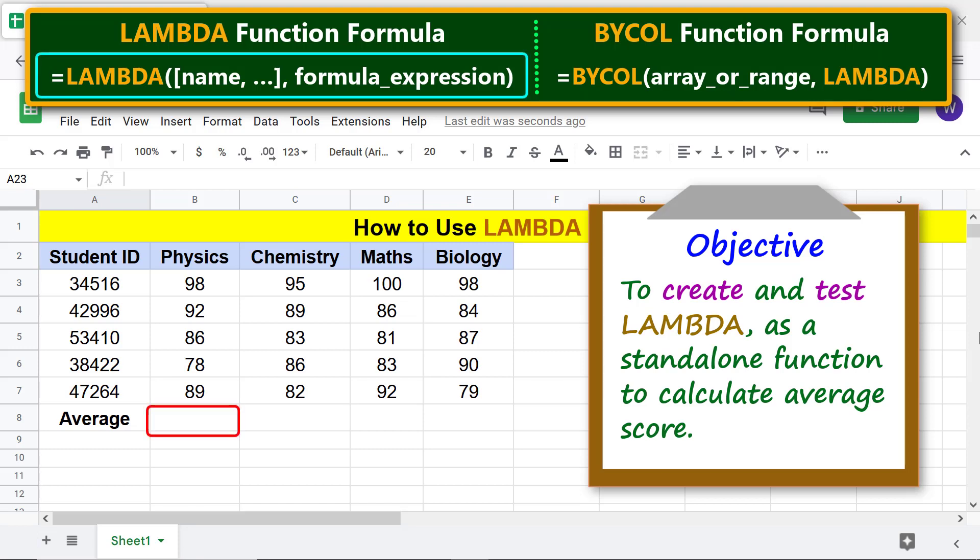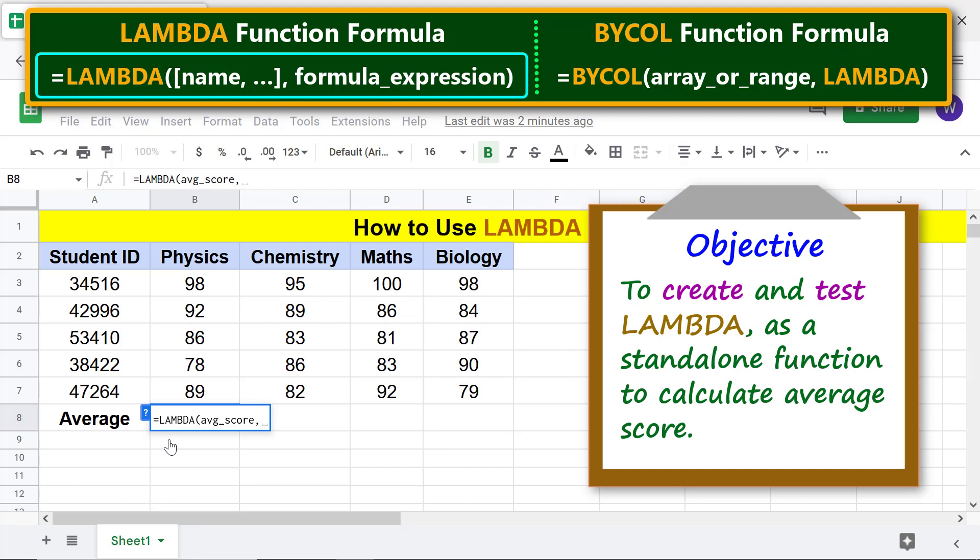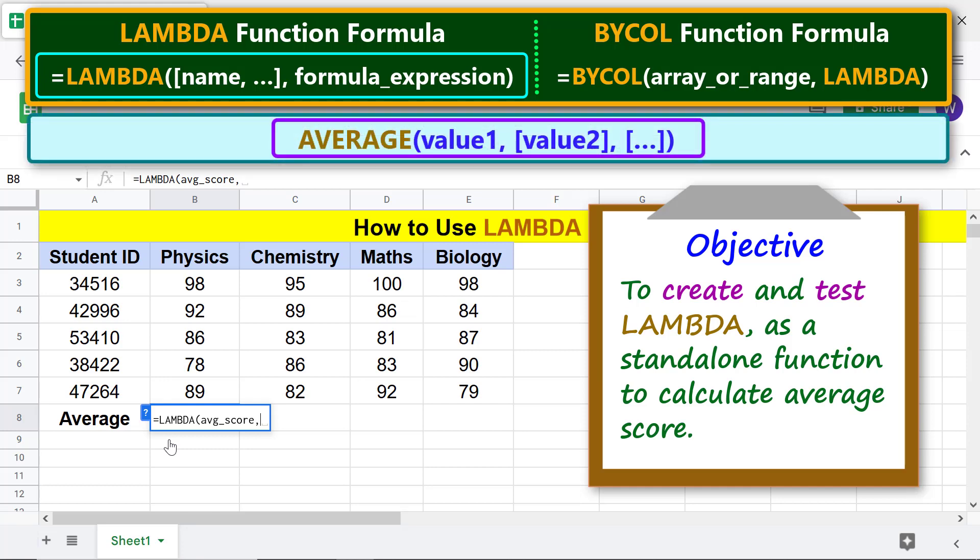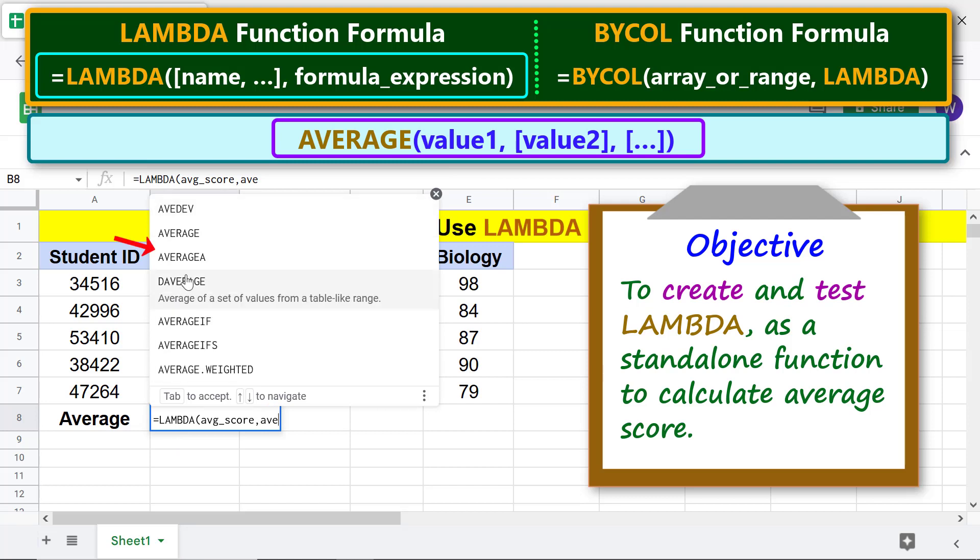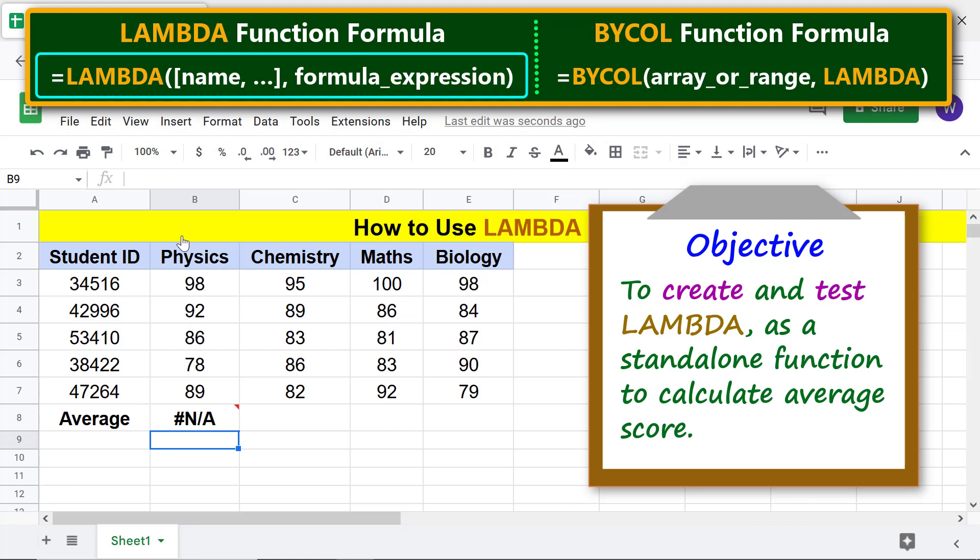Okay, we are all set to type the LAMBDA function formula. First, type the equal to symbol, type L-E-M and select LAMBDA. For name, type, for example, average_score and type comma. For formula expression, type the average function formula. The average function formula is: type A-V-E and select average. For value 1, type this name. Type two closing parenthesis, one each for average and LAMBDA. Press enter. LAMBDA has returned a DNA error because we have not called the function by passing the actual value of this argument.